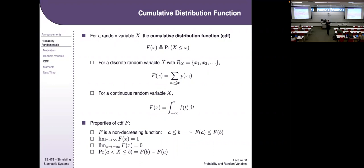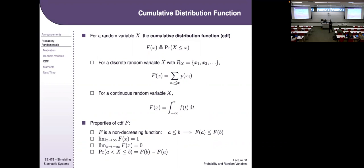The CDF is a great way to get around doing integration because it's already been done for you. If you have a CDF and want the probability of an interval, plug B into the CDF, plug A into the CDF, and subtract — no integration needed.